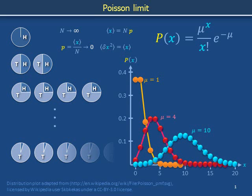In these slides we will present a special limit of the binomial distribution called the Poisson limit. As we will understand by drawing the pie charts on the left, this limit is sometimes regarded as the limit of rare events. We will analyze this limit using the mathematical equations at the top and visualize examples of probability distributions as illustrated to the right.